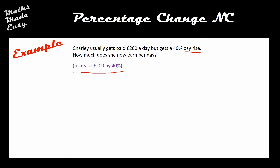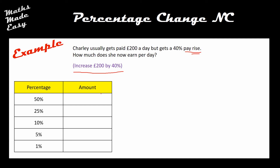Because we're doing this non-calculator, we need some certain key percentages. The ones I'm going to use are 50%, 25%, 10%, 5%, and 1%. We don't necessarily need all of these to work out a 40% pay rise, but having these five available means the calculation is very easy — and actually any percentage can be worked out using these.